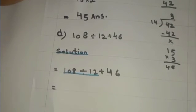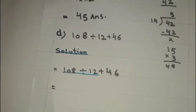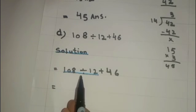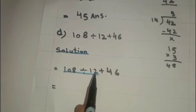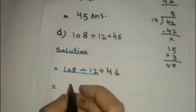You can see that according to DMAS we have to divide first. So students, we know that 12 nines are 108.